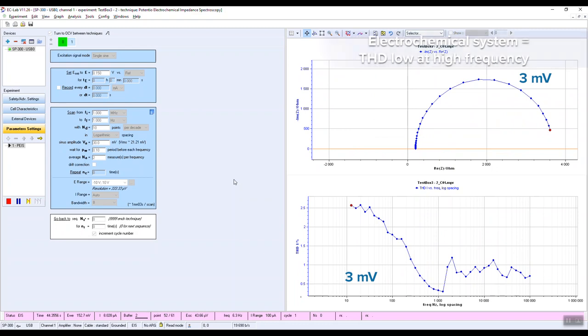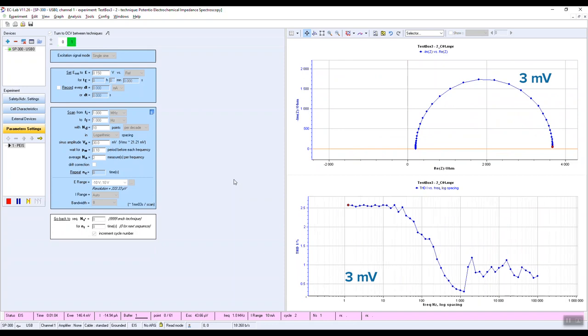As for real electrochemical systems, the THD is low at high frequencies. An increase of the THD is observed from 1 kilohertz. The expected shape of the Nyquist plot is a semicircle which corresponds to the measurement.